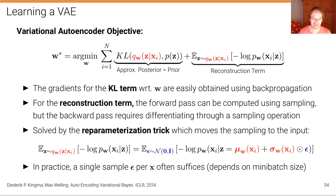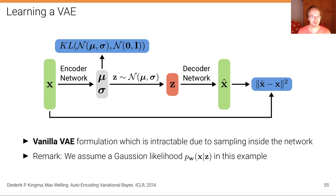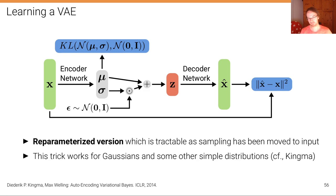The difference is that mu and sigma are deterministic functions of X, not stochastic, so for backpropagation to parameters w there is a deterministic relationship — that's the trick. We reparameterize to obtain a deterministic relationship for backpropagation while moving the sampling operation to the input layer. In practice, a single sample epsilon per data point is often sufficient depending on the mini-batch size; with batch sizes of 64 or 128, a single sample gives low-variance gradient estimates.